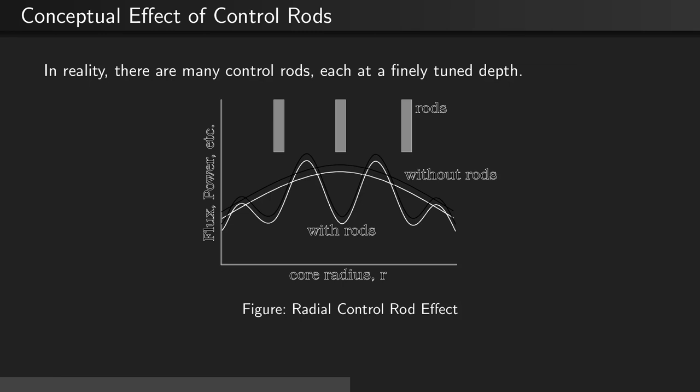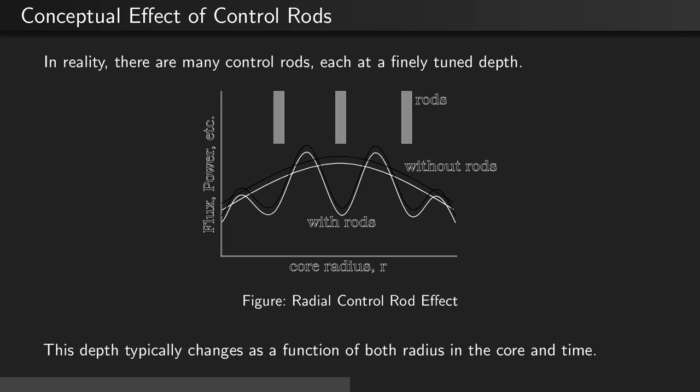In reality, there are many control rods, each at a finely tuned depth. As we see in this figure, we have different control rods as a function of radius in the reactor. This depth typically changes as a function of both radius in the core and time.